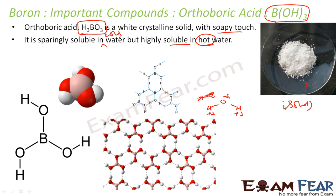That is why boric acid is solid — the hydrogen bonding gives it a cage-like structure. Any solid element must have some cage-like structure; without it, it won't be solid. For comparison, water is liquid because its bonding is not as strong. Diamond has an even stronger solid structure and is very hard.